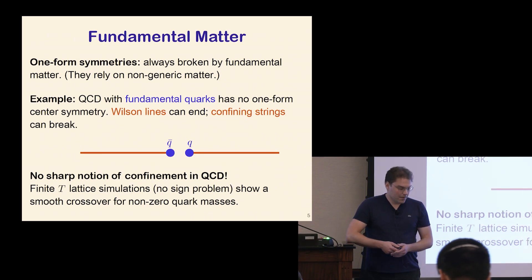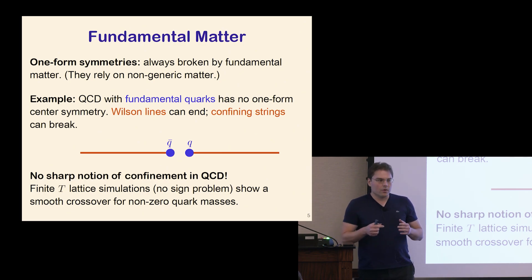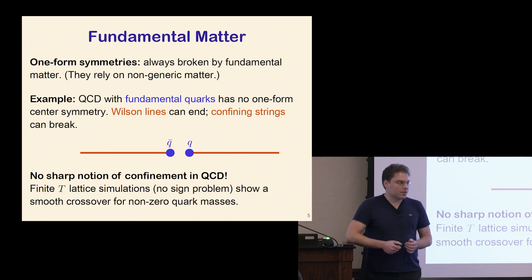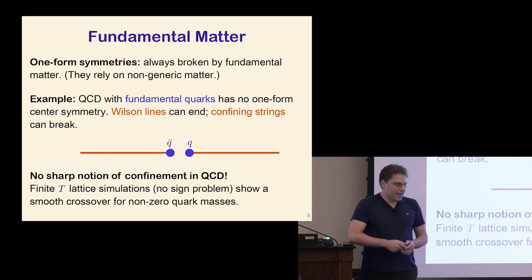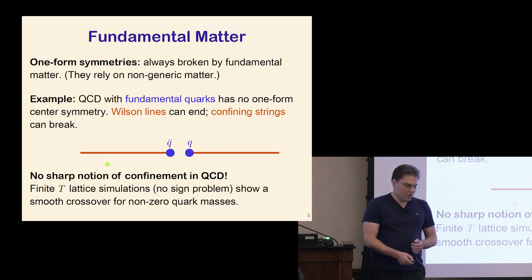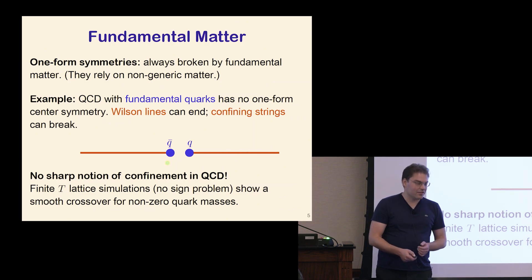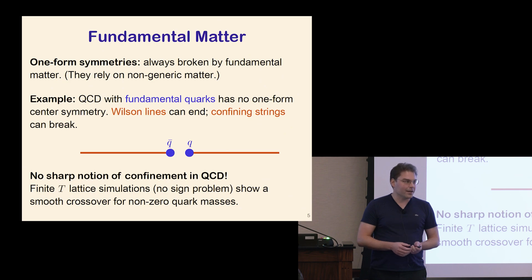Here's the problem with fundamental matter. The beautiful one-form symmetries require non-generic matter — certain matter representations must be absent or taken in some limit like very heavy quark masses. But in real QCD with real quark masses, we have very prominent fundamental matter, and those representations always break the one-form symmetries. This is related to the fact that in QCD with fundamental quarks, Wilson lines can end on quarks, confining strings can snap open, and there is no order parameter or symmetry to sharply characterize confinement.